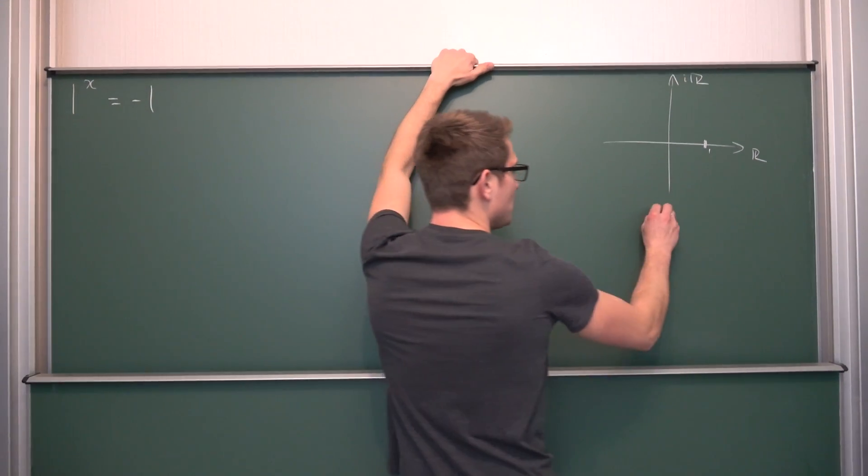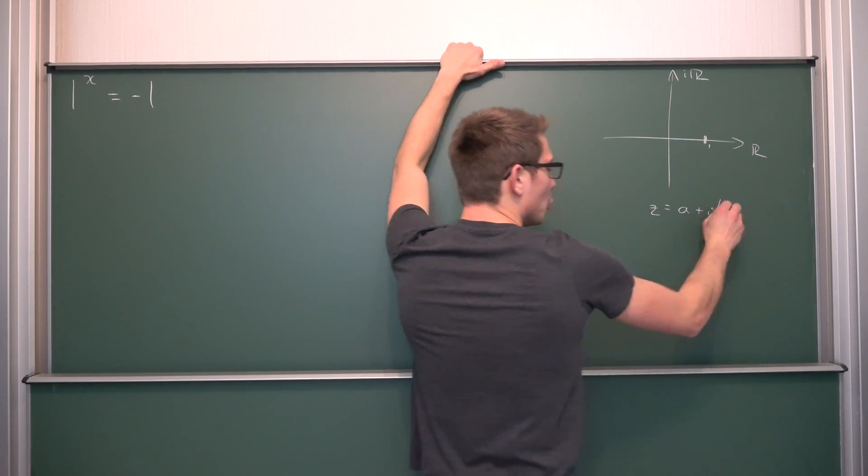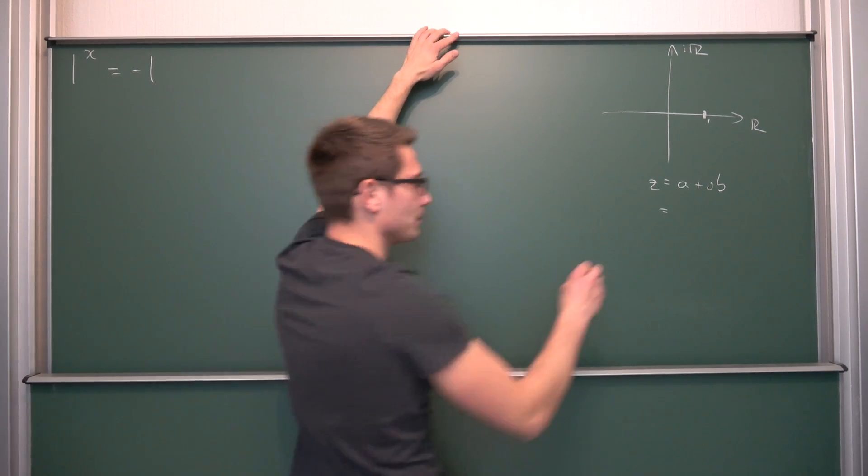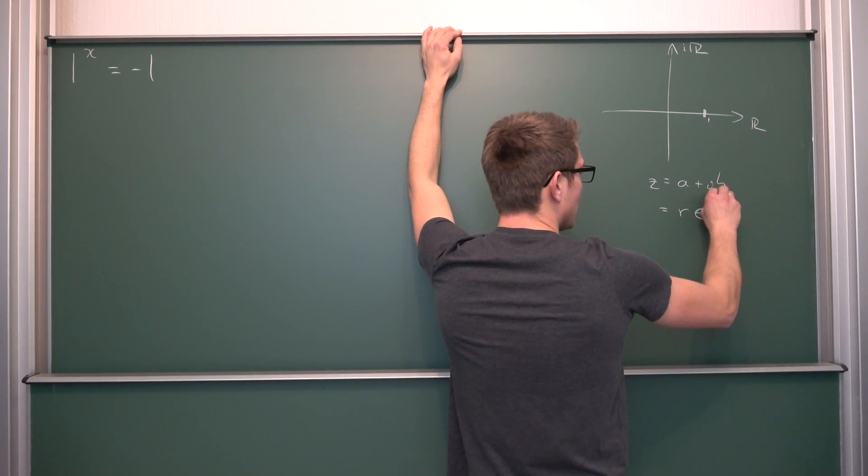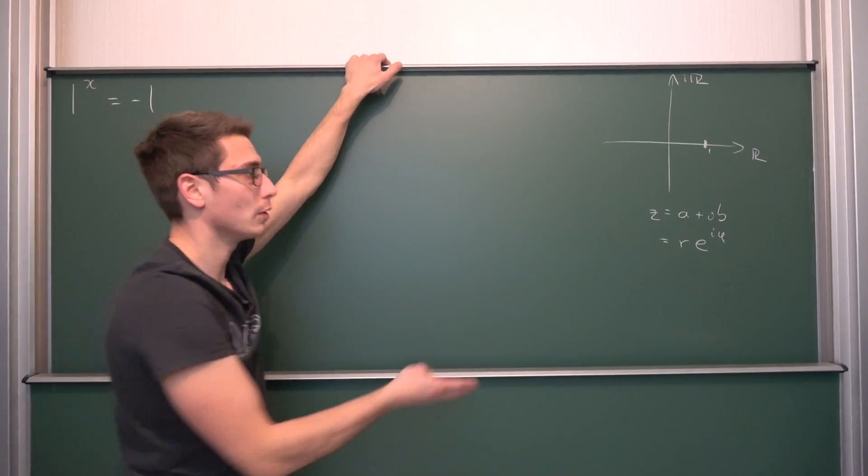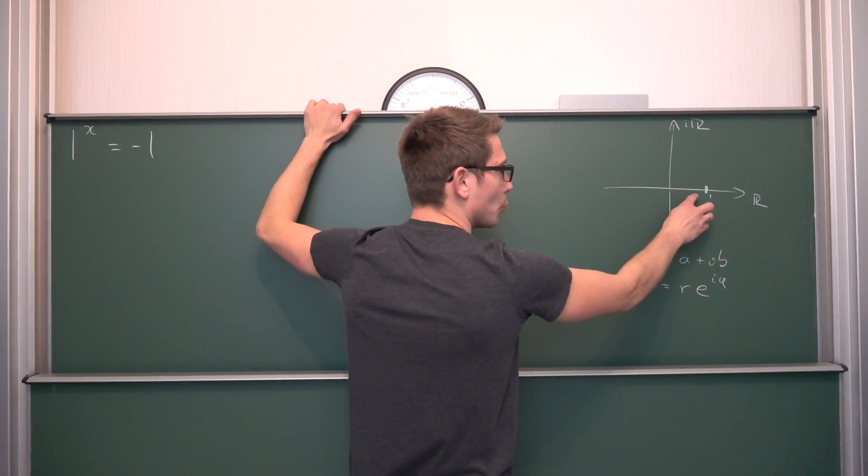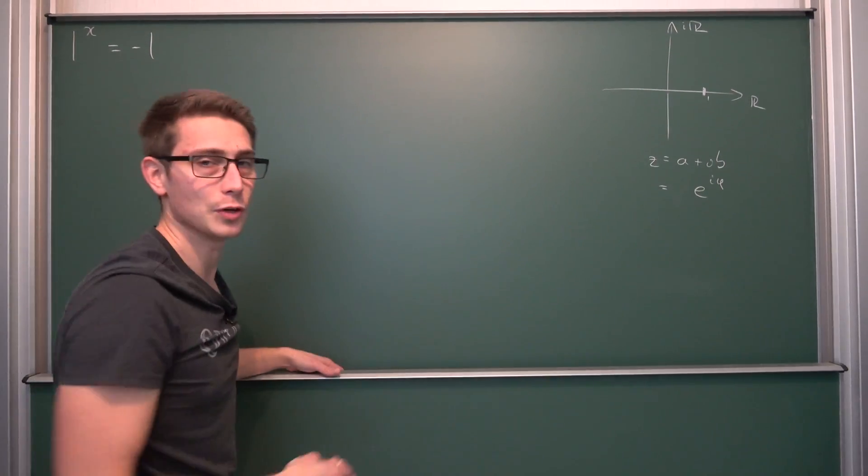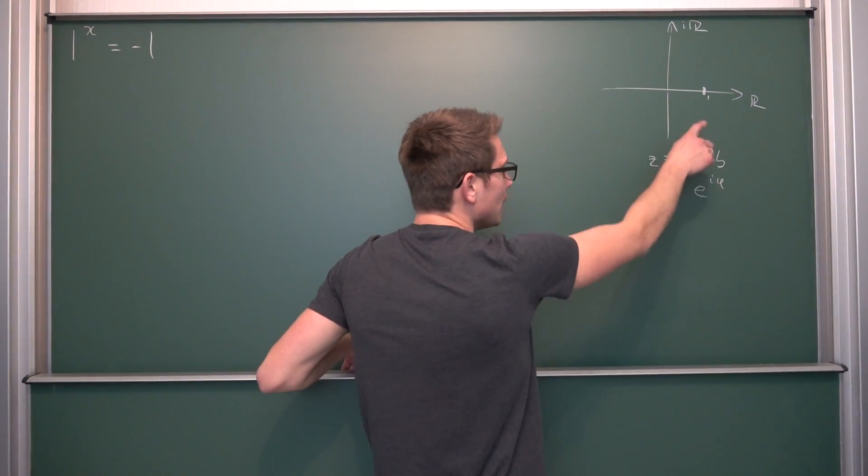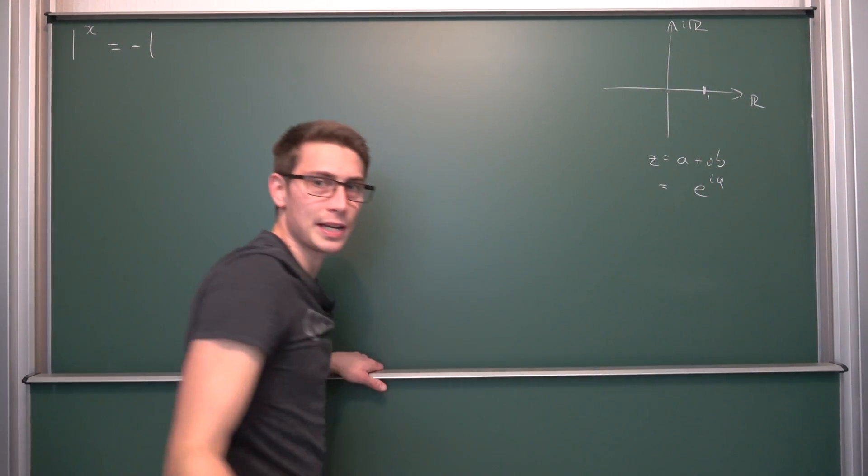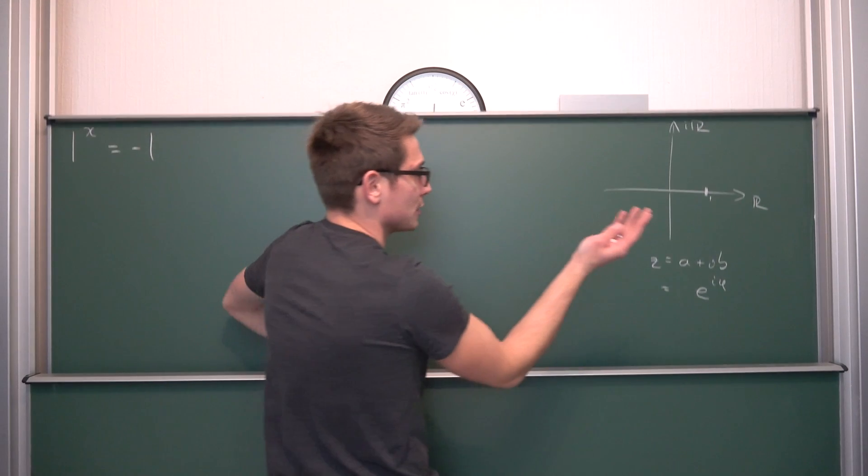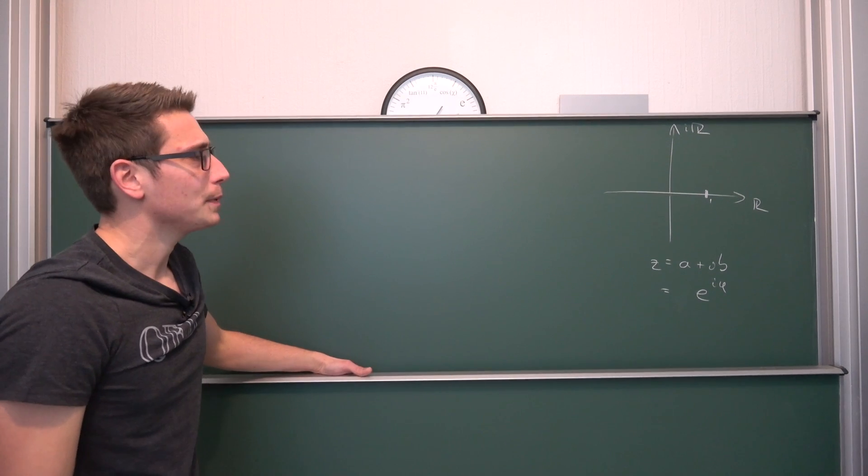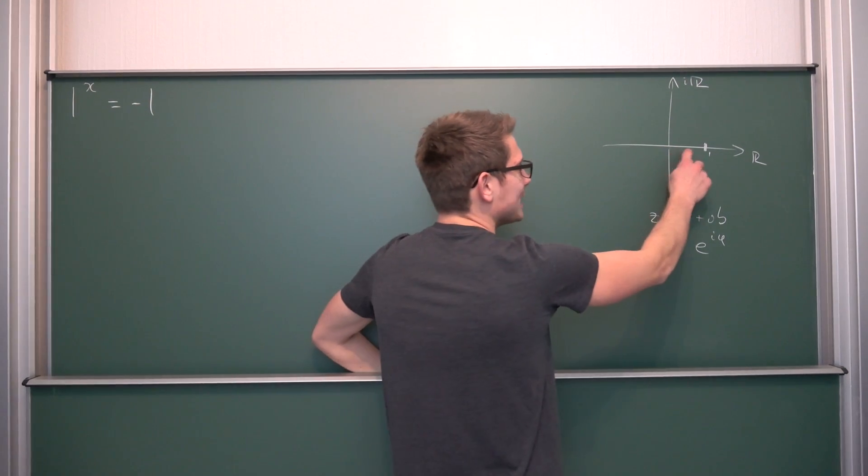Each and every complex number can be expressed as either a plus ib, real plus imaginary, or we can express it in polar coordinates. Namely, r times e to the iα, where r is the length, the magnitude of our vector in the complex plane. In our case for the number 1, it's going to be 1, obviously. From 0 to 1, we have a unit of distance. And α is the angle being enclosed, the so-called argument, by our real axis and our complex vector.